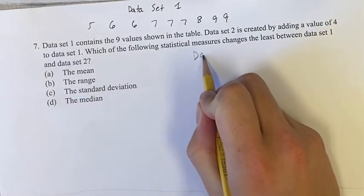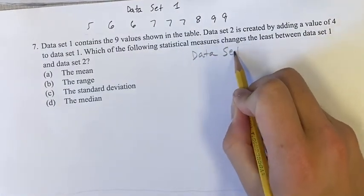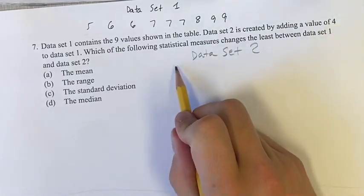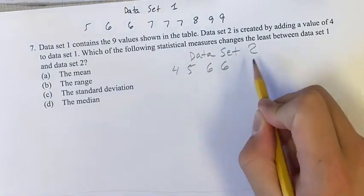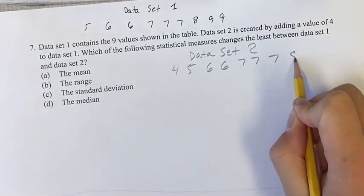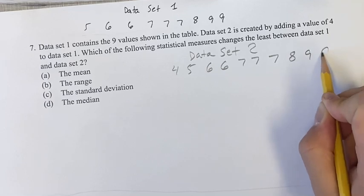Let's write down data set 2 so we know what we're looking at. We have a value of 4 and then data set 1, so we have 4, 5, 6, 6, 7, 7, 7, 8, 9, and 9.